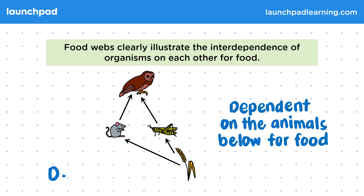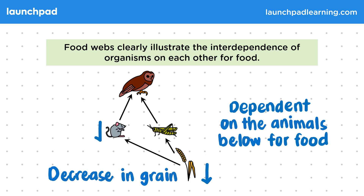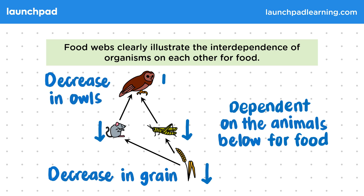Here you can see that a decrease in grain will limit the food available to mice and grasshoppers and decrease their populations. This decrease in populations will limit the food availability to owls in turn, causing a decrease in owl numbers.